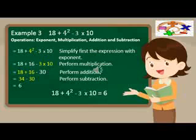For example three, simplify 18 plus 4 squared minus 3 times 10. The operations involved in this example are exponent, multiplication, addition, and subtraction.